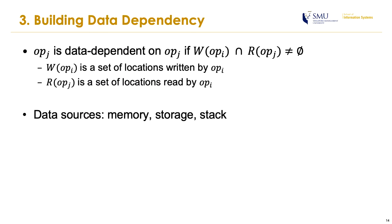We need both control and data dependencies to generate suitable fixes. However, building a control flow graph is a well-known task, so in this talk I will only introduce data dependency analysis at the bytecode level. An opcode J is said to be data dependent on opcode I if it reads data from a location written by opcode I. In Ethereum, data dependency comes from three data sources: memory, stack, and storage.